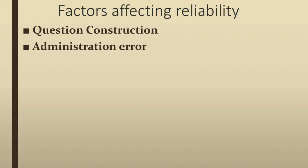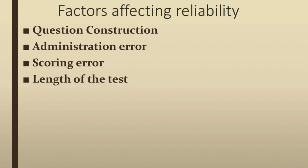Administration error is another type of systematic error. Test instructions might contain errors — either from the test administrator or the psychologist who constructed the test — and these obstacles to accurate data collection affect reliability. Scoring error is also a factor: a reliable test requires an accurate method of scoring and interpreting results, with predetermined guidelines. If the research supporting the test construction contains flaws, it may also fall under systematic error.